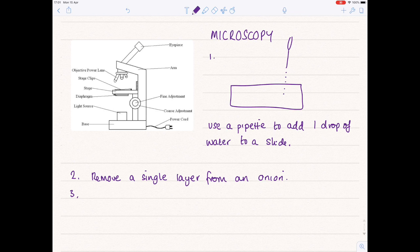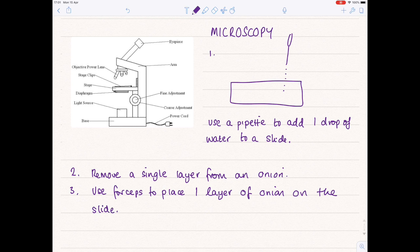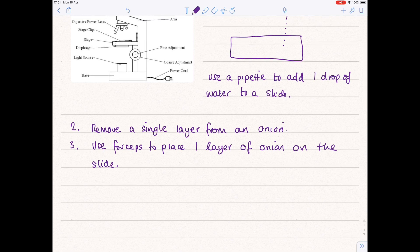Now place this layer of onion on that slide containing the water drop, and you want to use forceps in order to do this. Because we want to be able to view the onion, and remember it's pretty translucent, pretty transparent, we're going to use iodine in order to do this.